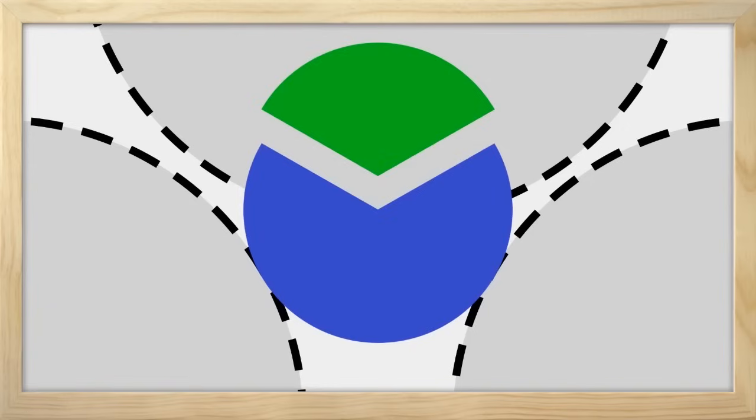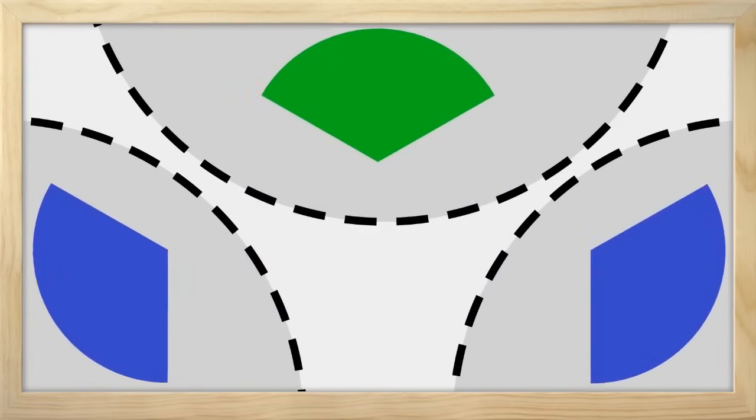A fraction represents a part of a whole. The green part of the circle is mine to play with. I have one of three parts of the circle. We call this a third. I have one third of the whole circle.